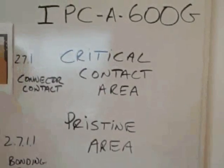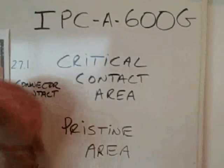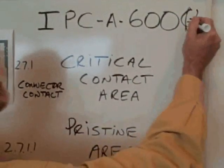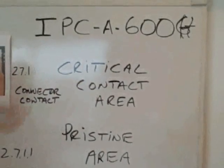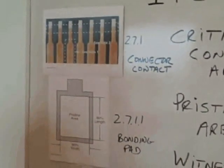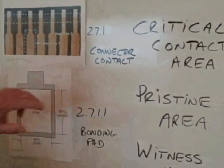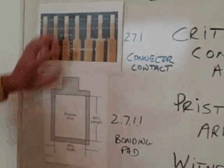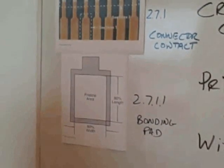So I looked in the standard. The latest revision is not 600G — it's 600H. So I will fix that now. In IPC-600H, the paragraph references are 2.7.1 and 2.7.1.1. Paragraph 2.7.1 talks about the critical contact area, and 2.7.1.1 illustration has the pristine area.